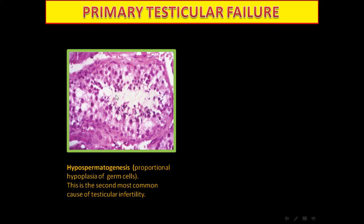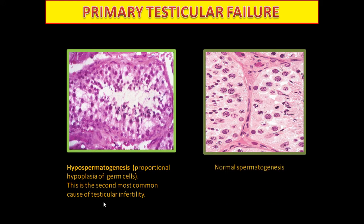Hypospermatogenesis: there is proportional hypoplasia of germ cells. We can see spermatogonia, primary spermatocytes, spermatids, and occasional spermatozoa. When we find occasional spermatozoa we say hypospermatogenesis. This is the second most common cause of testicular infertility.